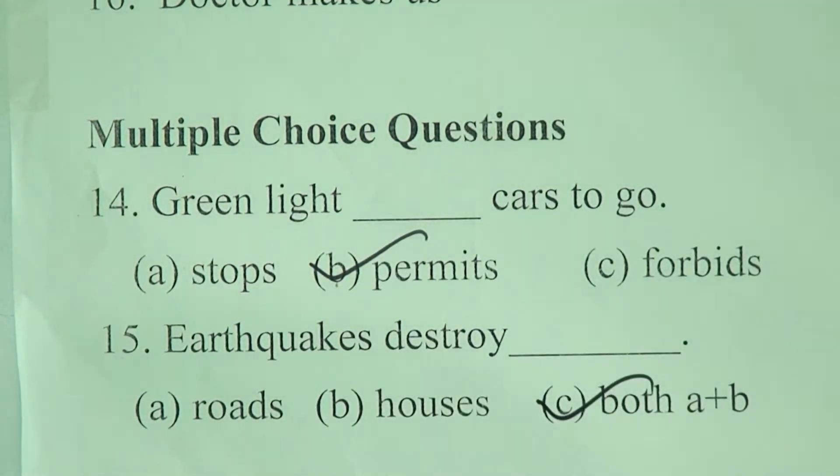Number 13: Which is the largest mosque of Bangladesh? Answer: Baitul Mukarram — same as the national mosque in question nine. Number 14: Which is the smallest district of Bangladesh? Answer: Meherpur. So Meherpur is the smallest district of Bangladesh.